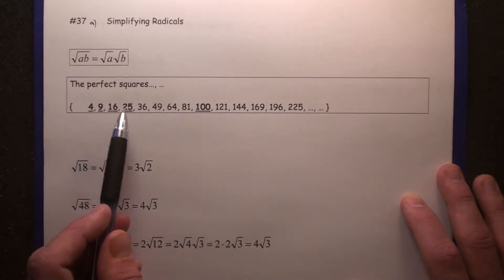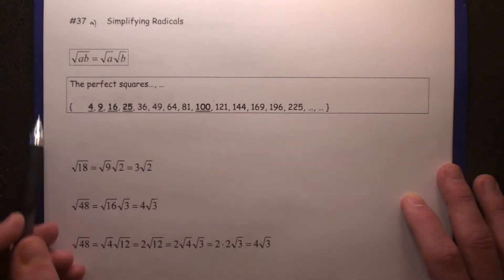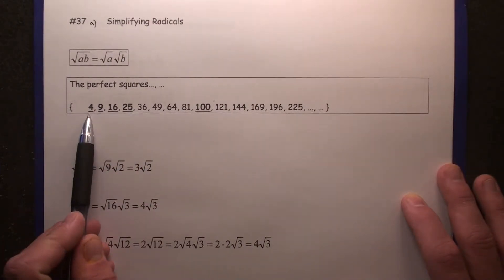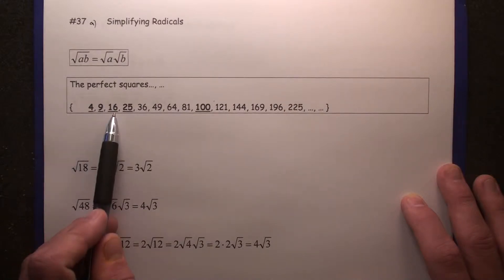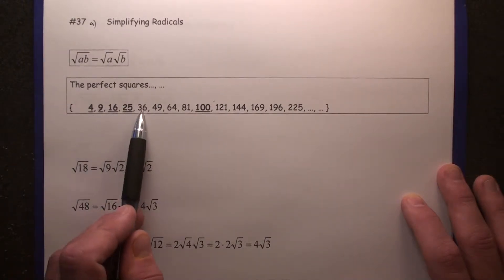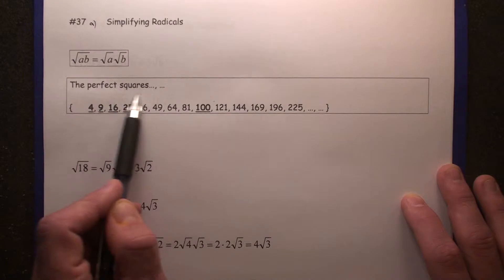Perfect squares: 4, 9, 16, 25. You do not have to memorize this. You can create it. What's 2 times 2? What's 3 squared? What's 4 times 4? What's 5 squared? 6 squared? 7 squared? That's why they're called perfect squares.